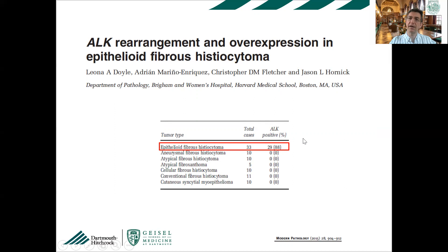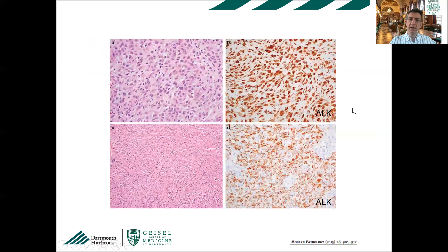Regarding the clone used for ALK staining: I don't use ALK1, which is most commonly available and used by hematopathologists. I use D5F3 or 5A4, which are more sensitive clones — these are what I recommend. The stain shows diffuse positivity for ALK and works very well in the great majority of cases.